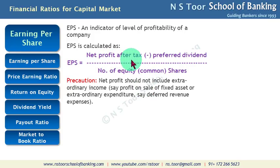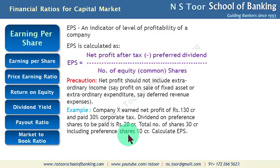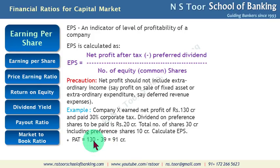Let us see this example. Company X earned a net profit of 130 crore and paid 30% corporate tax. Dividend on preference shares to be paid is 20 crore. Total number of shares is 30 crore, which includes preference shares of 10 crore. Calculate earning per share. We need net profit after tax: the profit is 130 crore, tax at 30% is 39 crore, so net profit after tax is 91 crore.